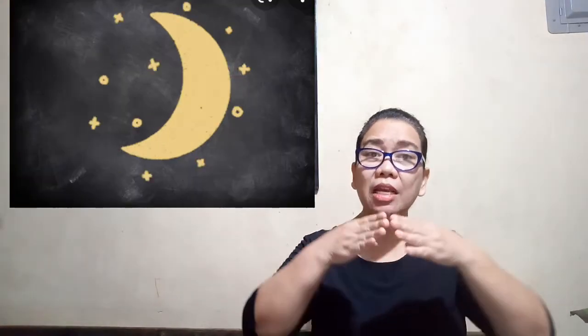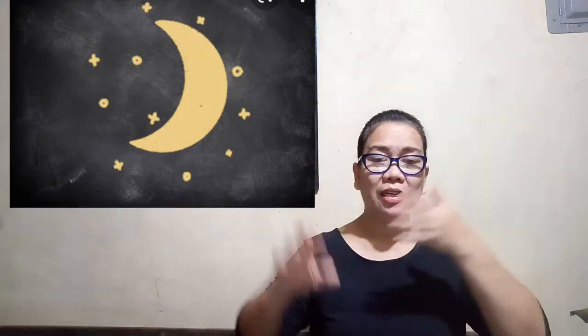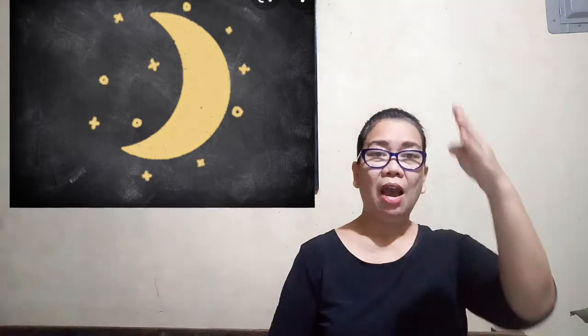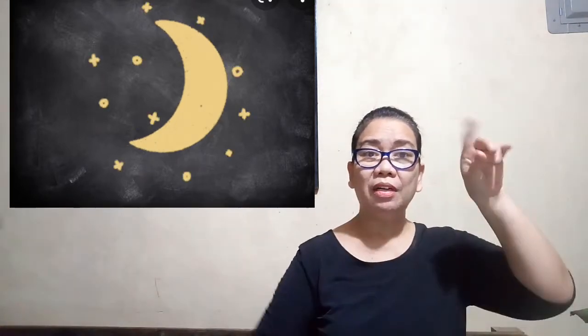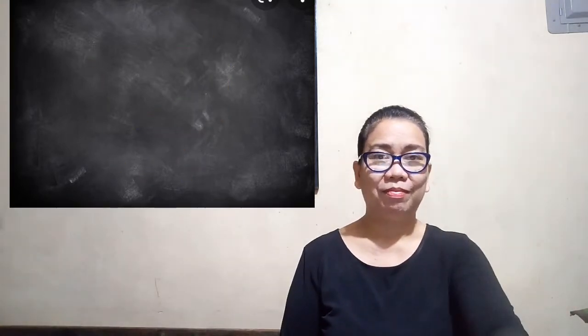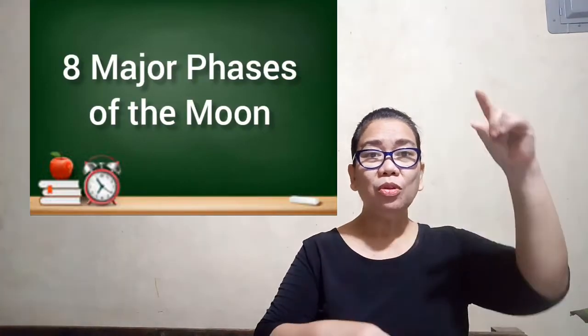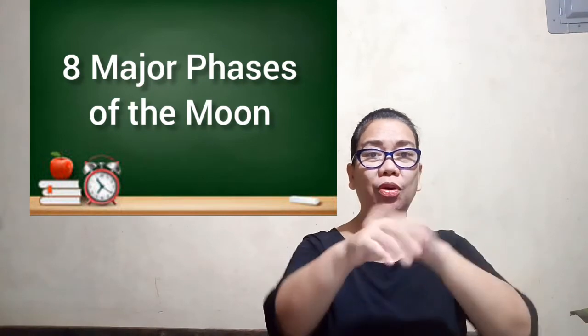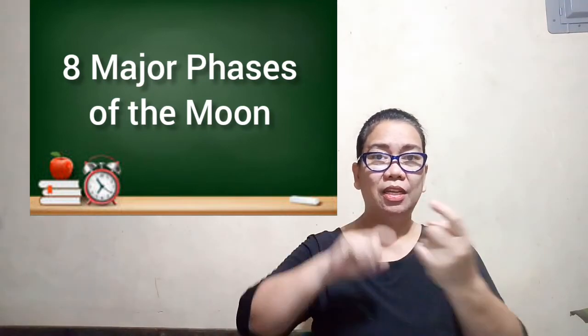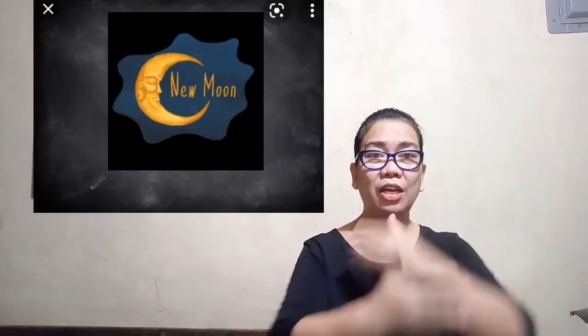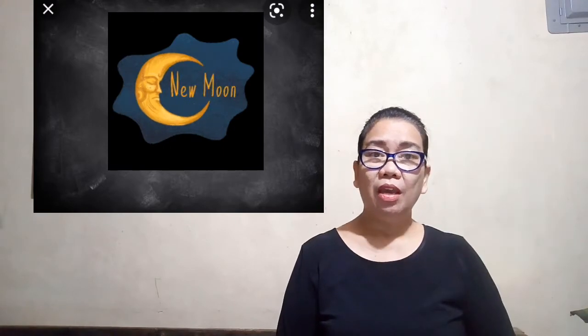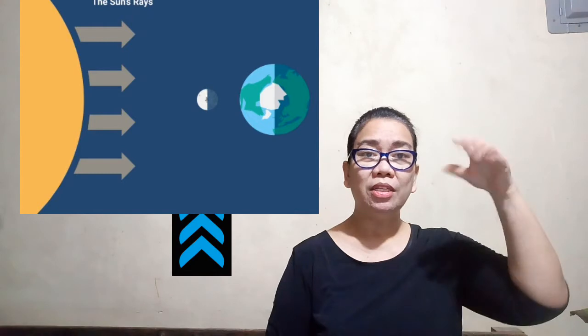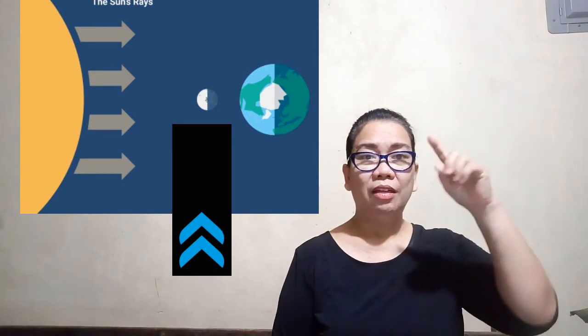The moon goes through eight major phases. The first is the new moon, which is seen when the moon is between the sun and the Earth.